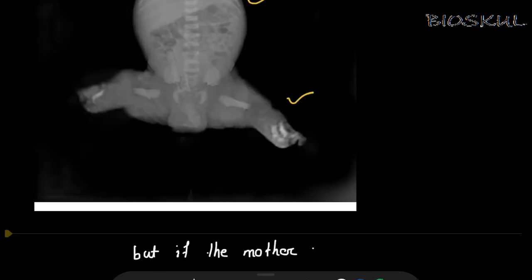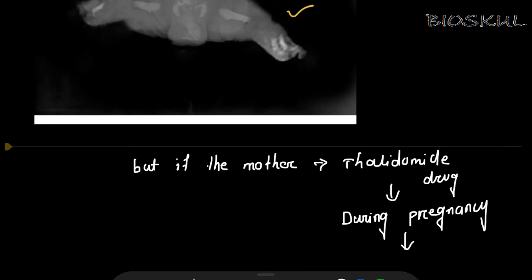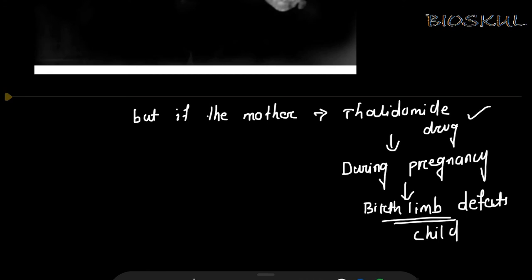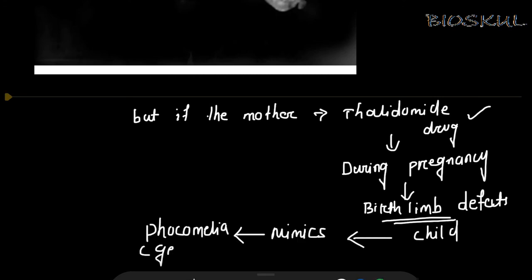But if the mother consumes the thalidomide drug during pregnancy, that also leads to limb defects in the child. So the birth limb defects in the child because of the thalidomide drug mimic or duplicate the phenotype of phocomelia, which is a rare genetic disorder.